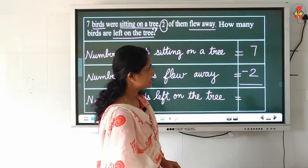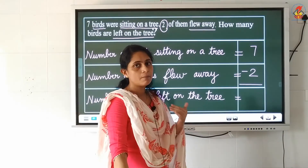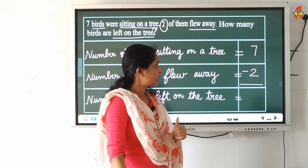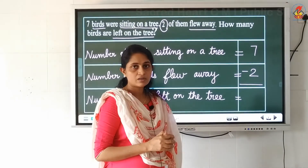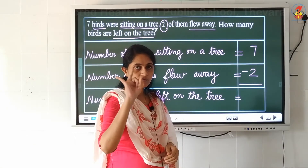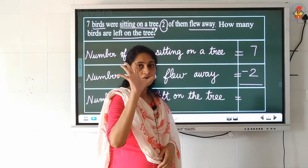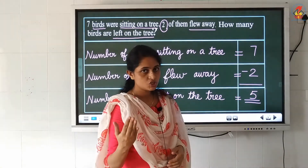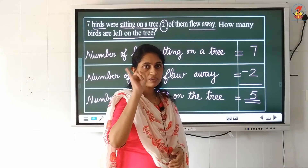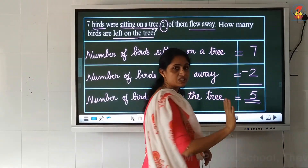How will you subtract? 7 minus 2. Start counting after the smaller number until you reach the bigger number. The smaller number among 7 and 2 is 2. So start counting after 2: 3, 4, 5, 6, 7. We reached 7. How many fingers are raised? 5 fingers. So your answer is 5.